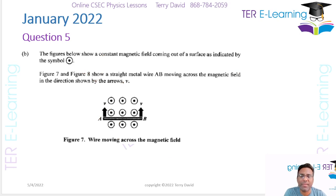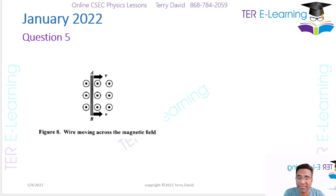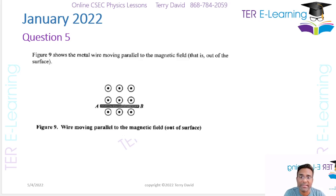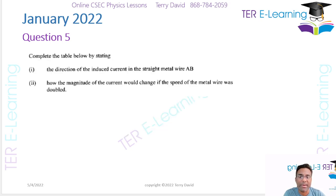In part B, the figure shows a constant magnetic field coming out of the surface, indicated by that symbol. Figures seven and eight show a straight metal wire — conductor AB — moving across the magnetic field. Figure nine shows the metal wire moving parallel to the magnetic field. This question is about electromagnetic induction: when a conductor cuts a magnetic field, an EMF is induced across the ends of the conductor. We need to complete the table showing the direction of the induced current and how the magnitude changes if the speed of the wire is doubled.